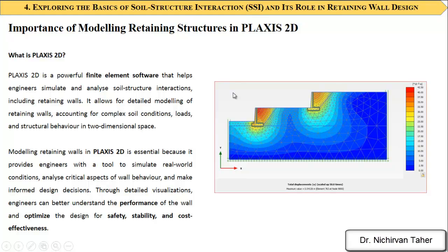Why is it important to model retaining structures in Plaxis 2D? Plaxis 2D is a very advanced and powerful finite element method software that helps engineers simulate and analyze various geotechnical problems, including retaining walls, pile foundations, dams, and other geotechnical problems. It allows for detailed modeling of retaining walls, including soil-structure interaction, complex soil conditions, and various load scenarios in a two-dimensional space.